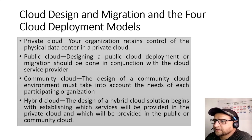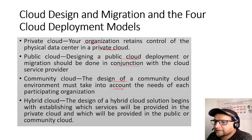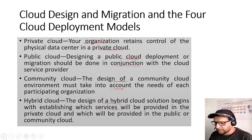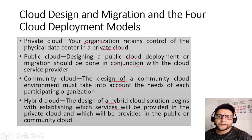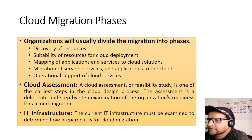For deployment models in cloud design: Private cloud — your organization retains control of the physical data center. Public cloud — designing a migration should be done in conjunction with the CSP. Community cloud — the design must account for the needs of each participating organization. Hybrid cloud — the design begins with establishing which services go in the private cloud and which go in the public cloud. For example, keeping a database private while hosting the website publicly.